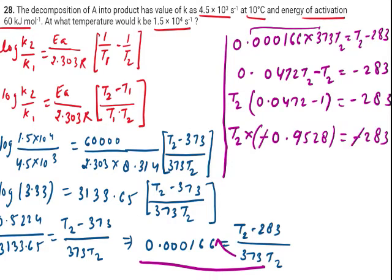I am going to cancel the subtraction sign from here. It becomes T2. I am going to take this term there: 283 divided by 0.9528. So I will get the value of T2 from here that is 297 Kelvin.